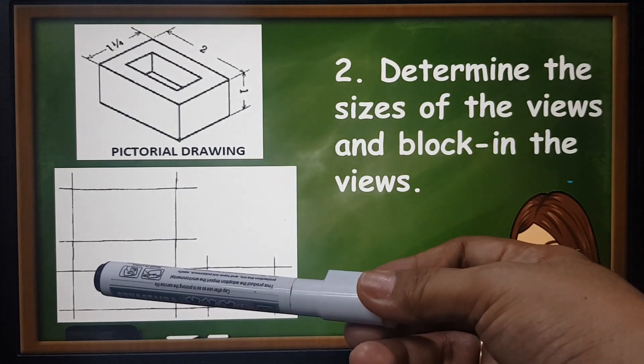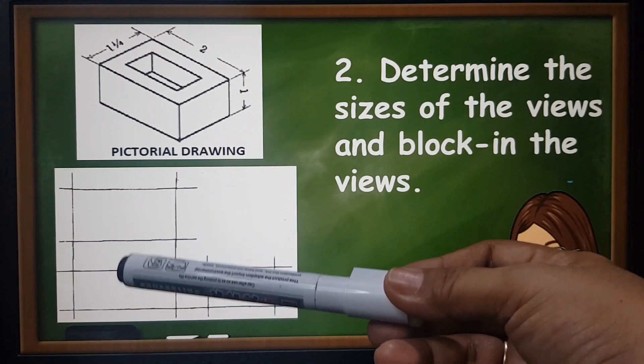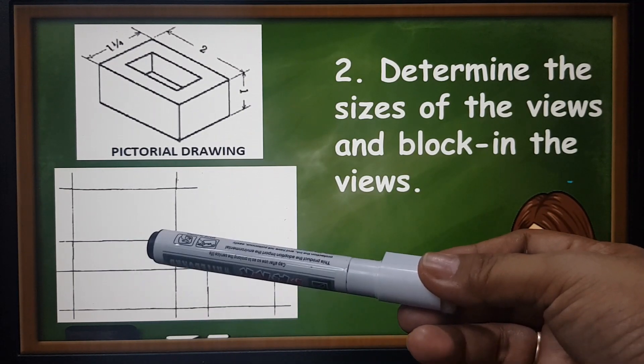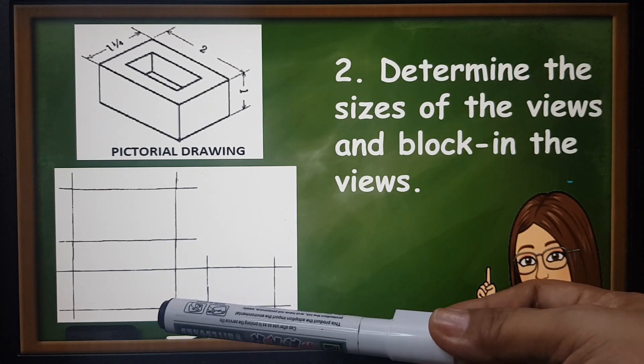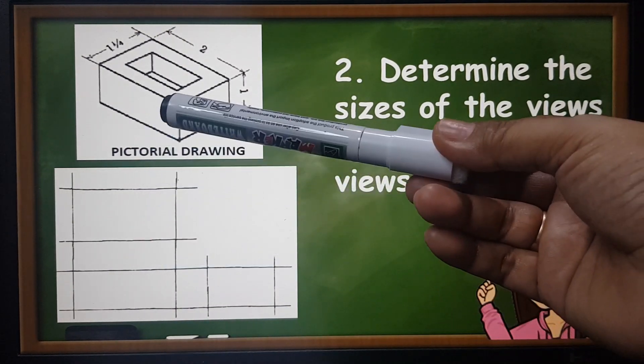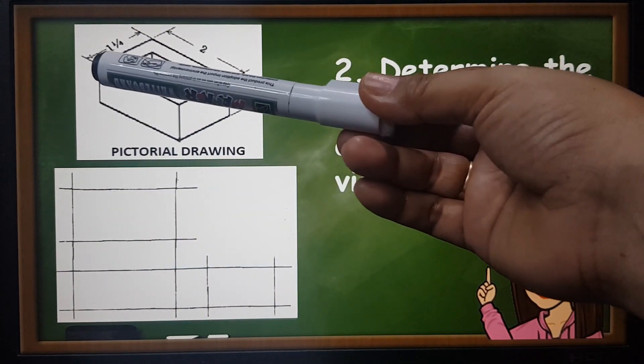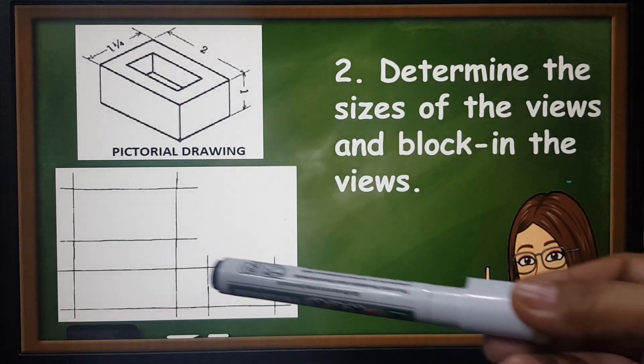Then make a space between views. Assign the space between views here. Whatever the size on the top and the front is the same distance or gap between the front and the right side. Then get the width of the top and the right side.